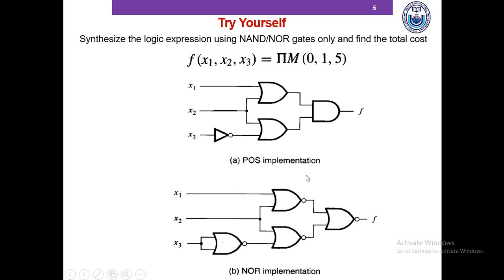What is the cost of the circuit? The number of gates is 4, and the total number of inputs to gates is 8. So the cost of the circuit is also 12.